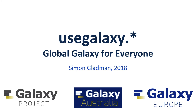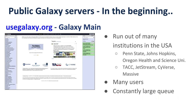There's been a long history of public Galaxy servers around the world. The first of course was Galaxy Main, based at usegalaxy.org, run by the Galaxy project itself. It's hosted at various institutions in the US and has quite a large compute backend. It has very many users, constantly has a large queue, and runs a large number of jobs every day. Sometimes if you submit a job on Galaxy Main it could take two or three hours to get through the queue before your job even starts running.